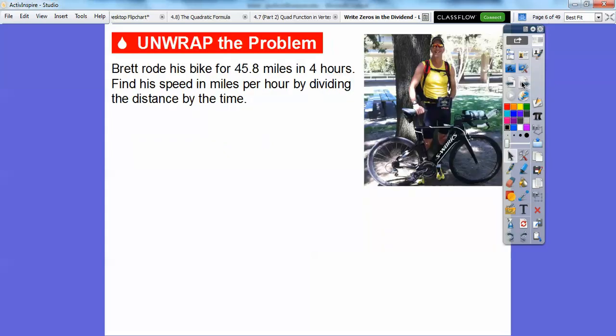Let's try a problem here. Brett rode his bike for 45.8 miles in four hours. Find his speed in miles per hour by dividing the distance by the time. So we're going to divide 45.8 divided by four. Let's estimate this. 45.8 divided by four is going to be close to 44 divided by four. That's a nice, easy, friendly division. That's going to give us 11, so we're going to get an answer close to 11.